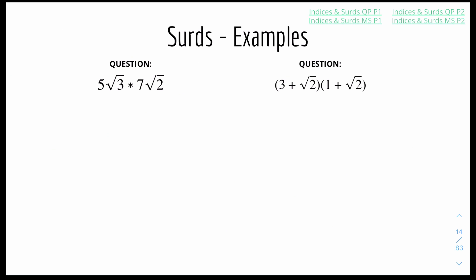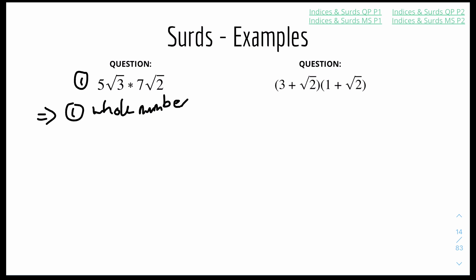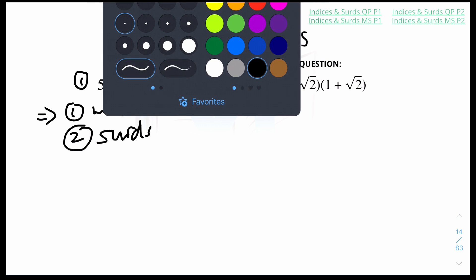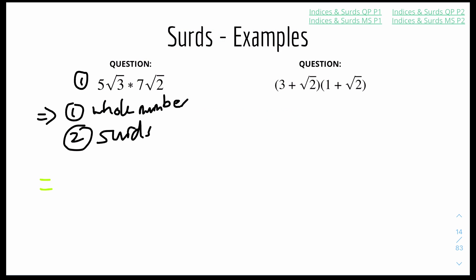Moving on to examples. Question 1: 5 surd 3 times 7 surd 2. We do two things: times the whole numbers together, and times the surds together. So 5 times 7 equals 35 on the outside, and surd 3 times surd 2 combines to become surd 6 on the inside. The final answer is 35 surd 6.